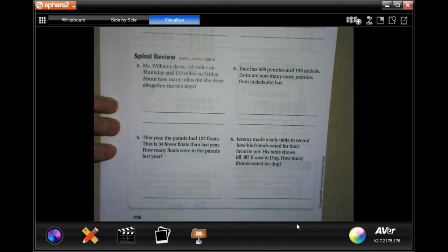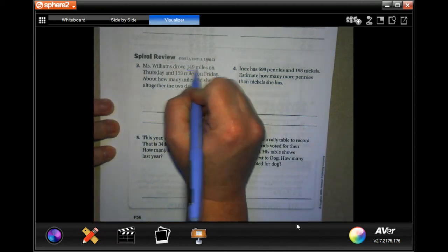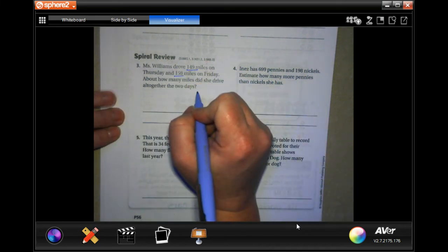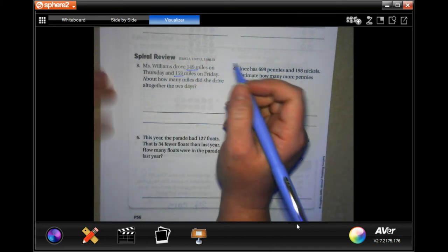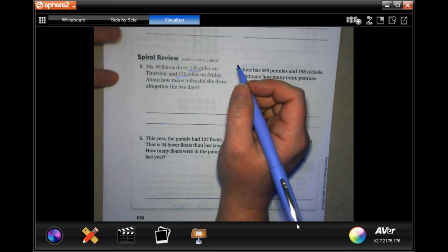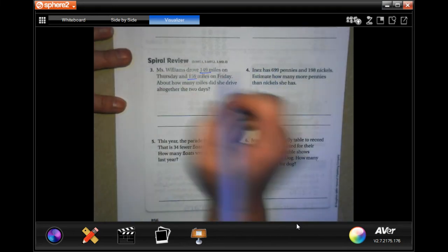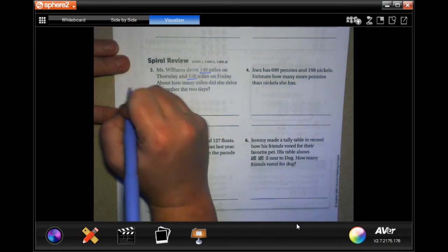Ms. Williams drove 149 miles on Thursday and 159 miles on Friday. About how many miles did she drive all together in the two days? So, I would go ahead and round those numbers. So, 149 is going to round to about 100. And 159, that 5, makes it go up to 200.